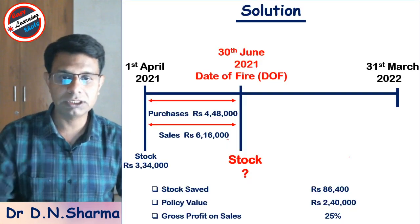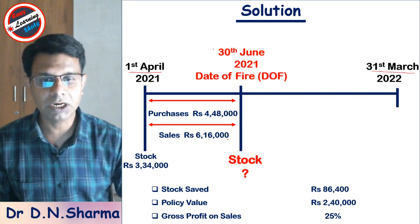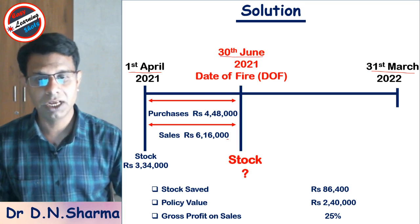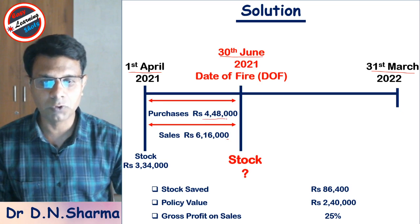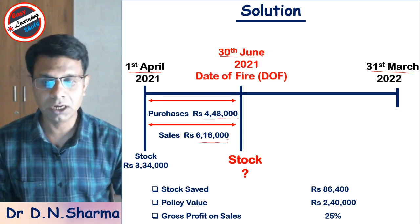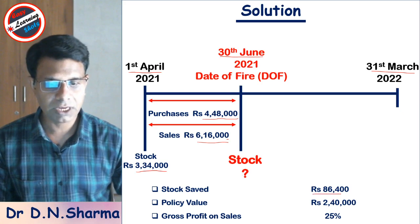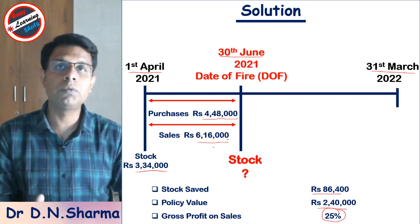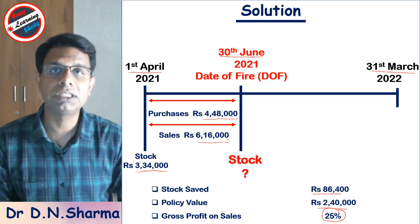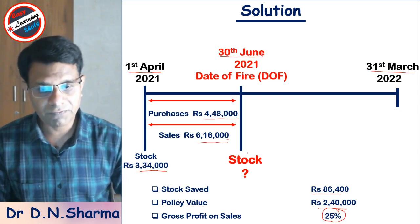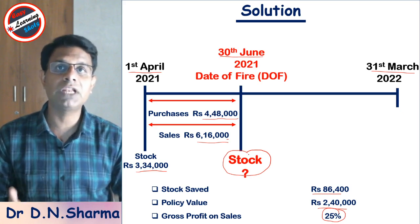Now let us summarize this question. The financial year runs from 1st April 2021 to 31st March 2022, and the date of fire is 30th June 2021. The data provided includes purchases of 4,48,000 and sales of 6,16,000. Opening stock is valued at 3,34,000. Additional information includes stock saved, policy value, and gross profit rate. First we prepare a memorandum trading account to find out the value of stock present at the time the fire broke out, and from that we calculate the amount of claim for loss of stock.